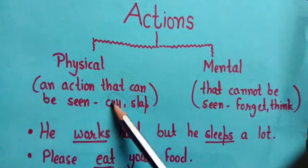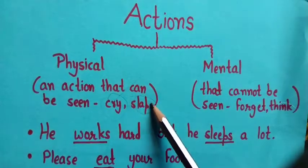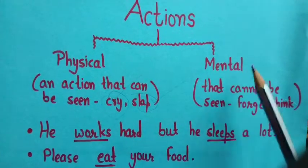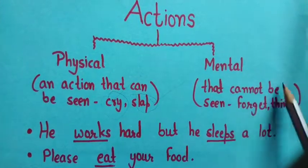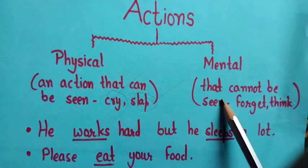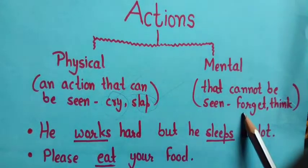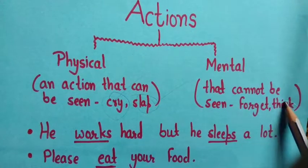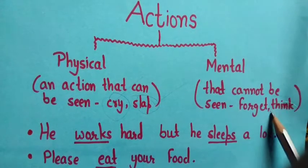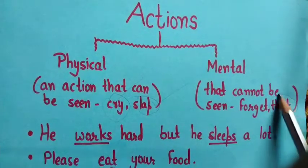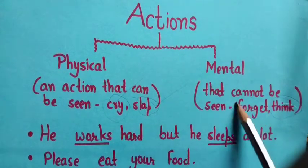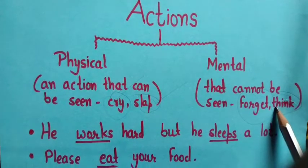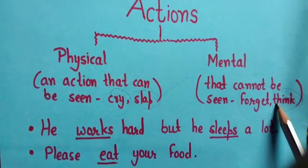We can see if someone is crying or slapping someone. Mental actions are those that cannot be seen, for example, forget and think. We can't see thinking or forgetting. These actions cannot be seen.